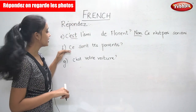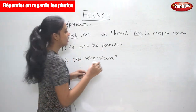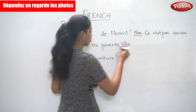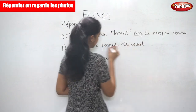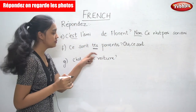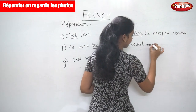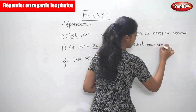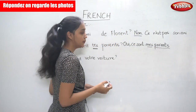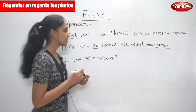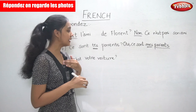The next one: 'Ce sont tes parents' — these are your parents. We answer positively: 'Oui.' The second person becomes first person, so 'tes' becomes 'mes.' The noun 'parents' is plural, so we use 'mes.' 'Oui, ce sont mes parents' — yes, these are my parents.